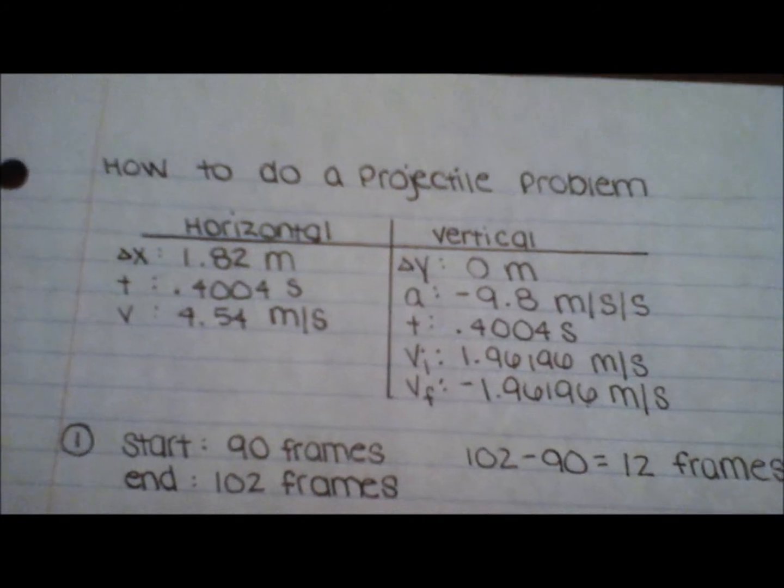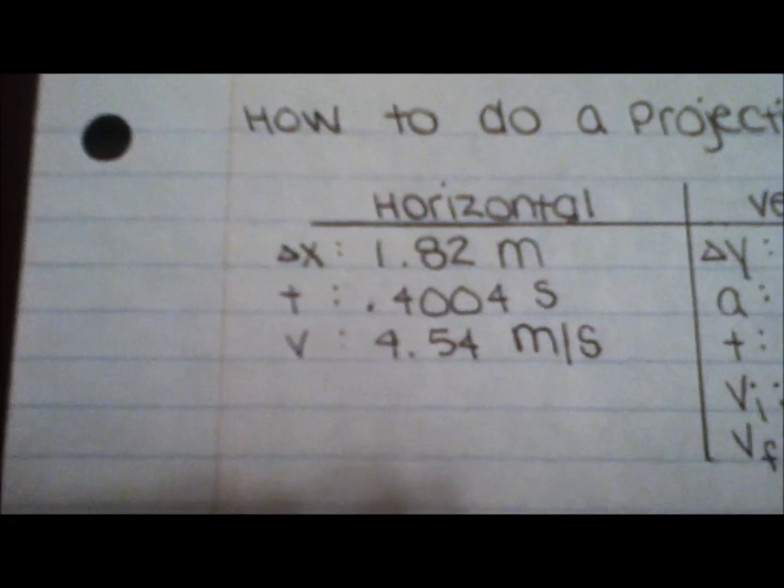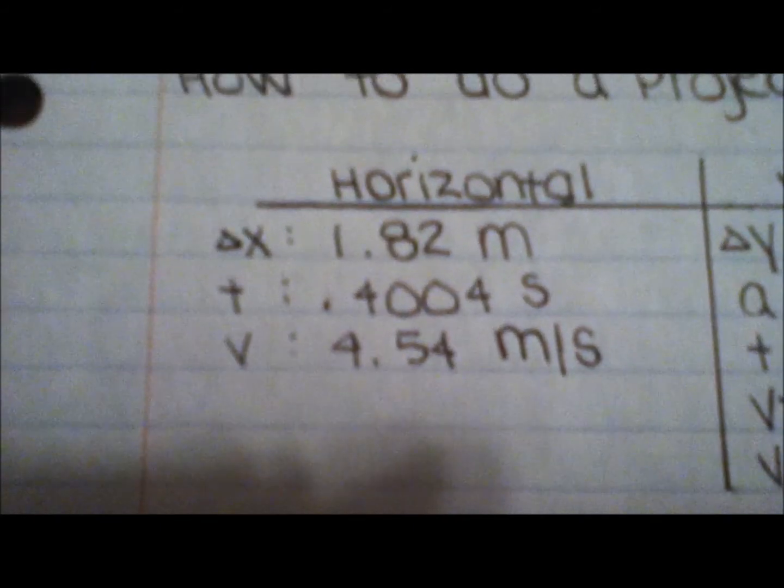Now that all of the vertical motion variables have been found, we are able to solve the horizontal motion side of the chart. The delta x, or displacement, has already been measured,